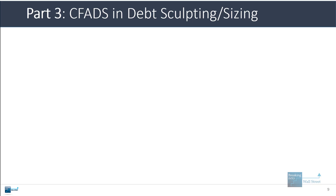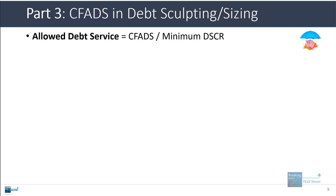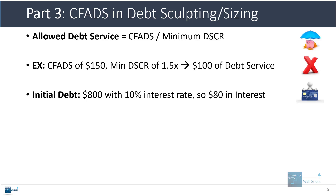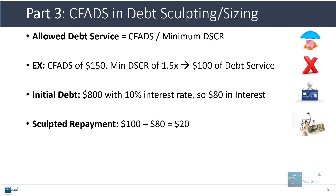In the context of debt sculpting and sizing, the allowed debt service in a period equals the cash flow available for debt service divided by the minimum debt service coverage ratio. So if CFADS is 150 and the minimum DSCR is 1.5x, that's $100 of debt service. If initial debt is 800 with a 10% interest rate, that's $80 in interest, and the sculpted repayment is 100 minus 80, or $20.